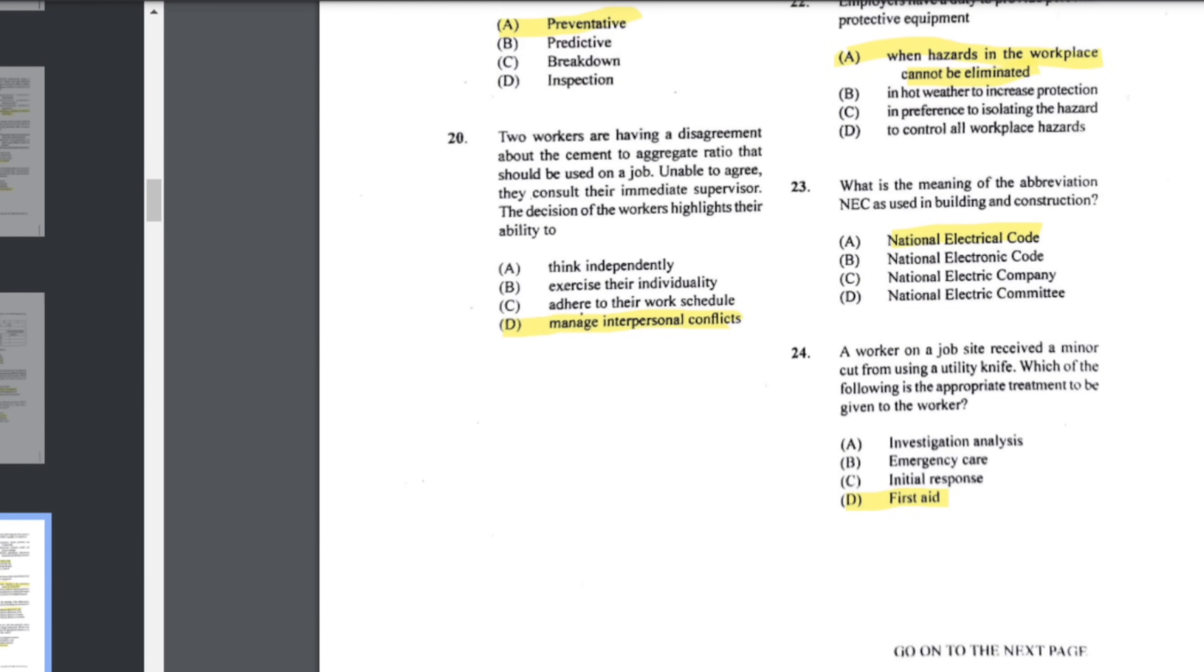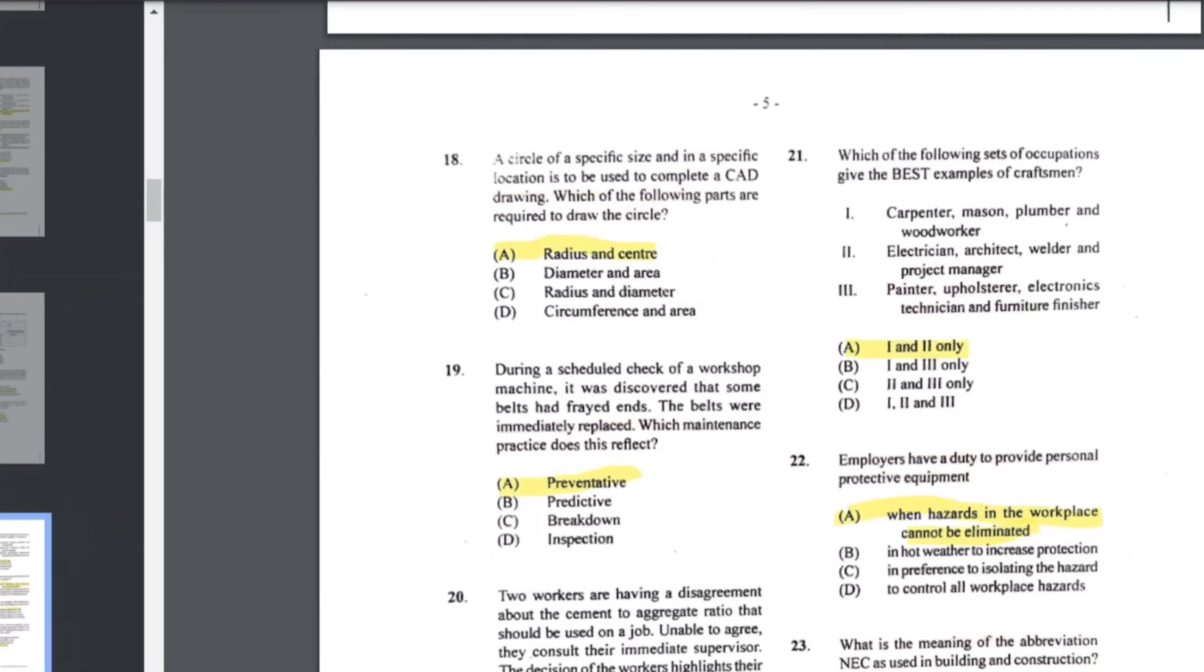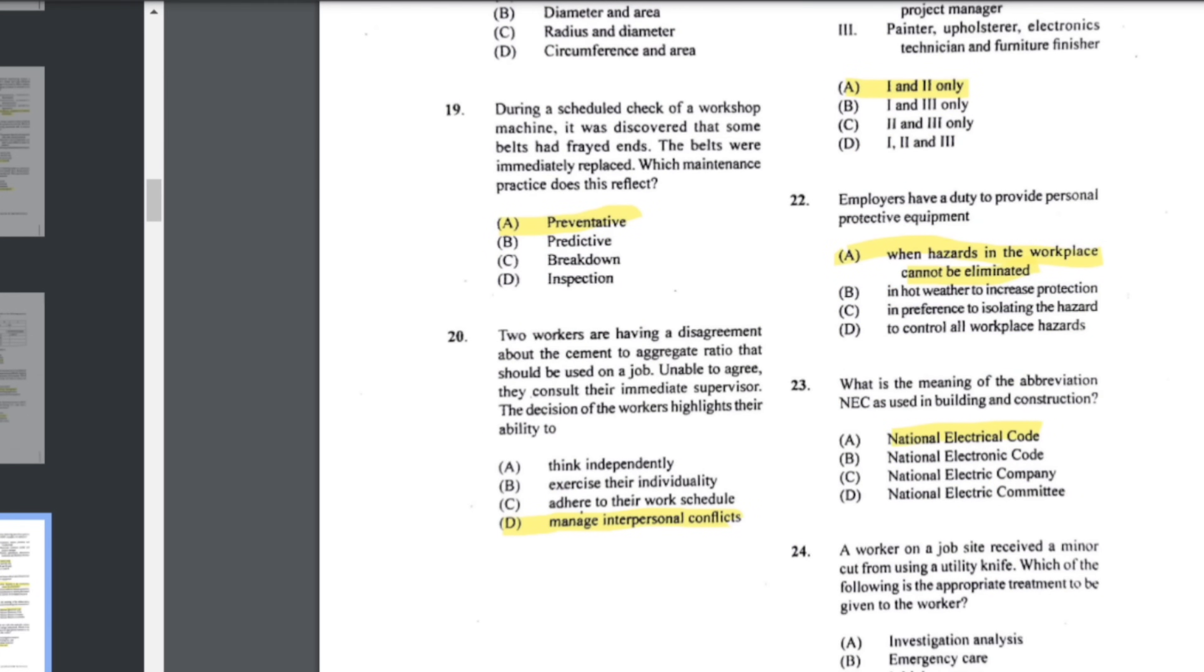Number 20: two workers are having a disagreement about the cement to aggregate ratio that should be used on a job. Unable to agree, they consult their immediate supervisor. The decision of the workers highlights their ability to manage interpersonal conflicts. Number 21: which of the following sets of occupations give the best examples of craftsmen? The answer says A, which is one and two only, but three includes painters, upholsters, electronics technicians, and furniture finishers. A craftsman is just defined as a person who is skilled in a particular craft. While this is A, I do believe the answer would be D, one, two, and three, but let me know in the comments if you think differently.